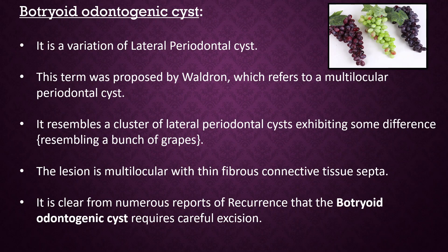Botryoid Odontogenic Cyst: This is a variation of lateral periodontal cyst. This term was proposed by Waldron and refers to a multilocular periodontal cyst. It resembles a cluster of lateral periodontal cysts, resembling a bunch of grapes. The lesion is multilocular with thin fibrous connective tissue septa. Numerous reports of recurrence indicate that the botryoid odontogenic cyst requires careful excision.